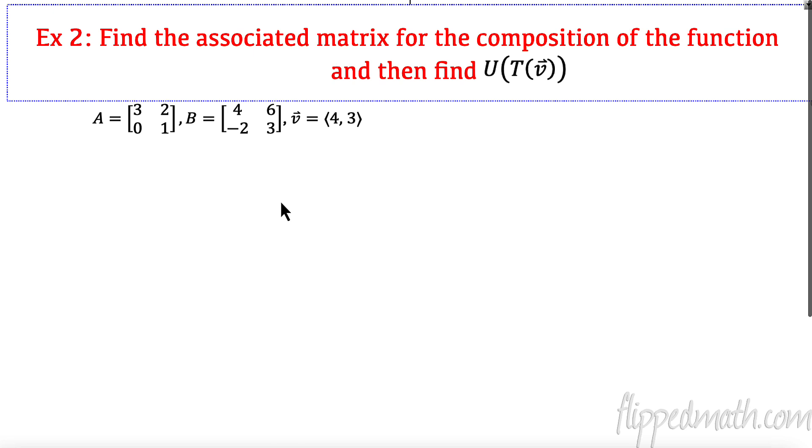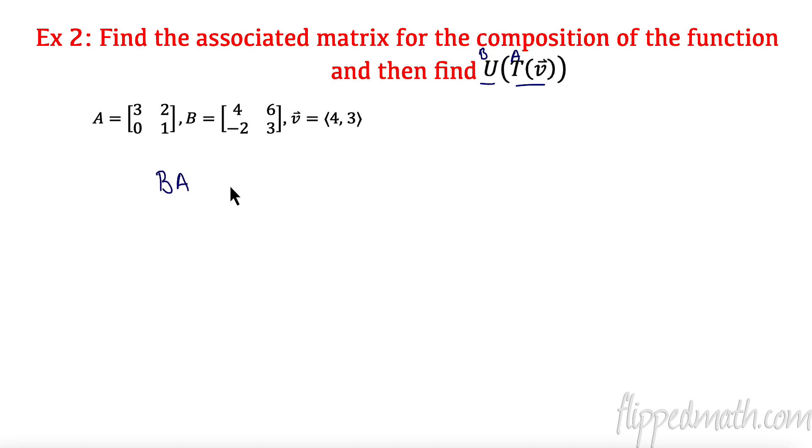All right, let's try another one. You'll notice this says T and U. Remember, T is A and B is U. So in this case, I'm actually going to multiply B times A to get my associated matrix. So that means I'm going to do 4, 6, negative 2, 3, times A. 3, 2, 0, 1. So I want you to multiply those together and tell me what my associated matrix is, and then give me the new transformed vector. So pause the video and try this one on your own.